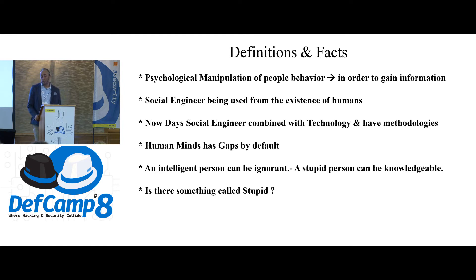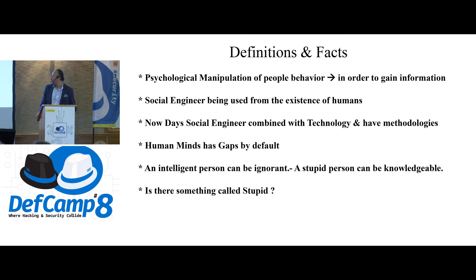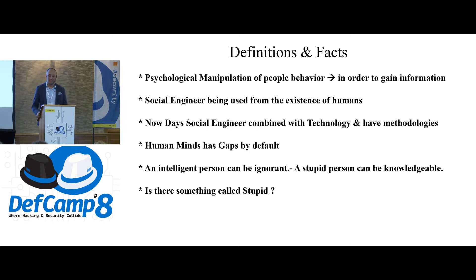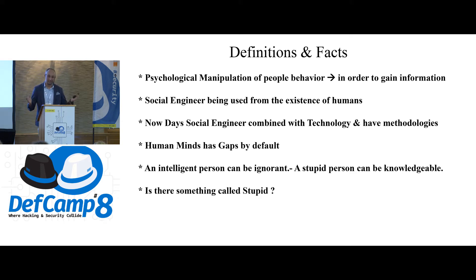Social engineering is the psychological manipulation of people's behavior in order to get information. It has existed as long as humans have. Even little kids do social engineering — a child doing her homework, trusted by relatives, asking for chocolate is somehow influencing you. She's doing social engineering.